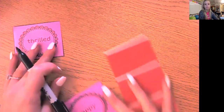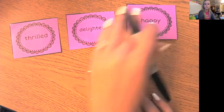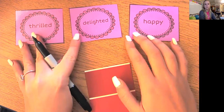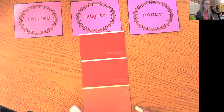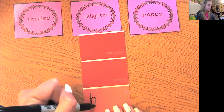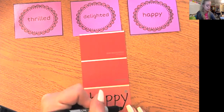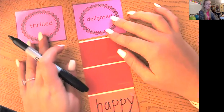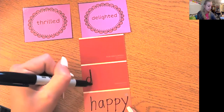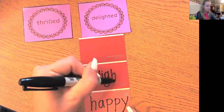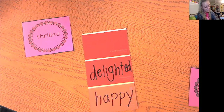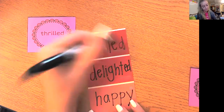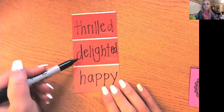We have one more to do on my last paint strip — three cards: thrilled, delighted, happy. All of these words mean that someone is happy. I'm going to go with the most common word as the weakest — happy — because we all know what happy means and we want to expand our vocabulary and stretch our thinking. So I'm going to put happy as the weakest. Now between thrilled and delighted, I'll put thrilled at the top. Let's practice reading these: happy, delighted, thrilled.